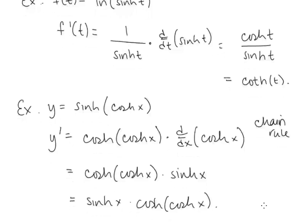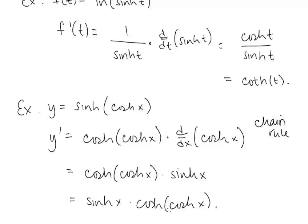Another example: y = sinh(cosh(x)). Again a composition, so using the chain rule we take the derivative of the outside function first — d/dx[sinh] = cosh — giving cosh(cosh(x)), then multiply by the derivative of the inside function, which is sinh(x). So y′ = sinh(x) · cosh(cosh(x)).